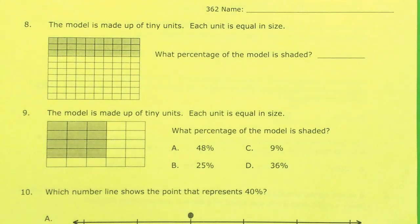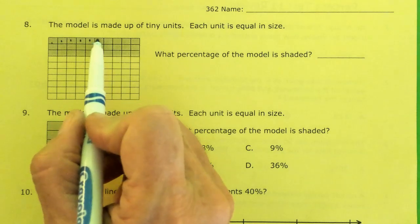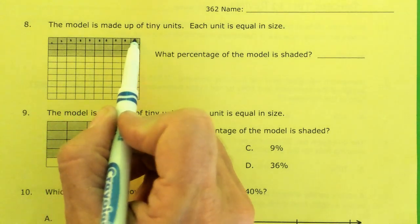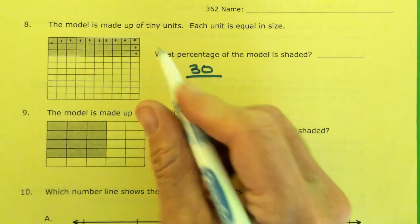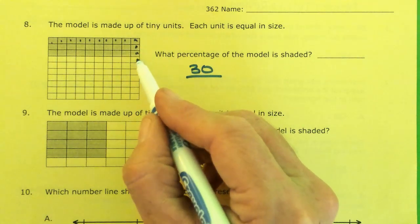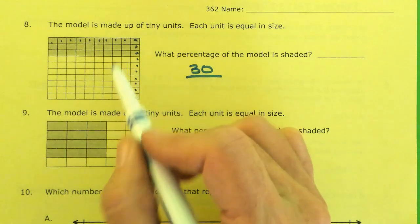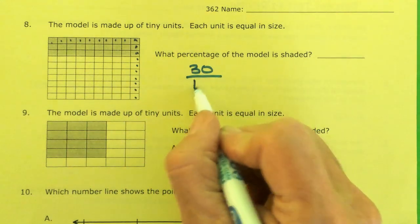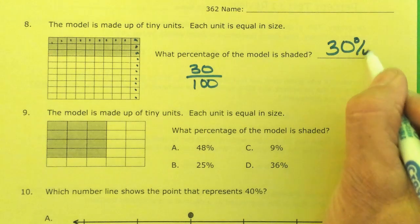This model is made up of tiny units. Each unit is equal size. What percent of the model is shaded? Let me count. 1, 2, 3, 4, 5, 6, 7, 8, 9, 10. 10, 20, 30, out of 100. And that's 30%.